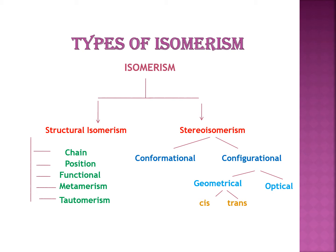Next, the classification of isomerism. Isomerism is broadly classified into two categories: structural isomerism and stereoisomerism.